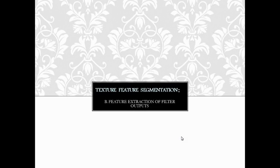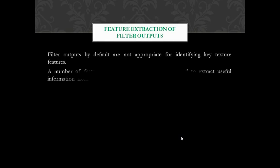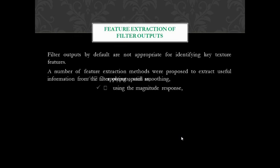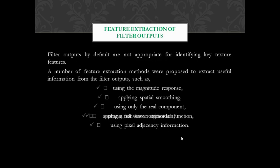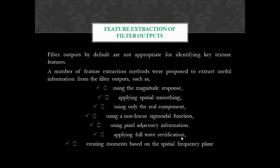The next part of texture feature segmentation is extraction of the filter output's features. Each of the filter outputs has some features extracted from it. Filter outputs by default are not appropriate for identifying the features directly, so a number of feature extraction methods are proposed. Some of the feature extraction methods involve magnitude response, spatial smoothening, using only the real component, a non-linear sigmoidal function, pixel adjacency information, full wave rectification, and creating moments based on the spatial frequency plane.